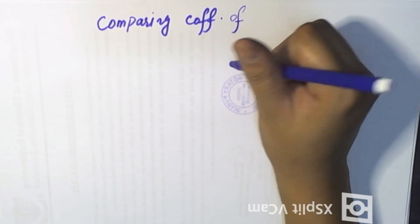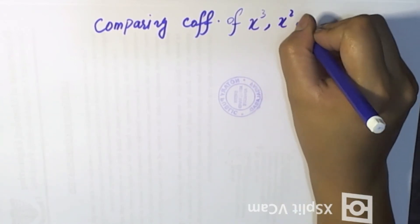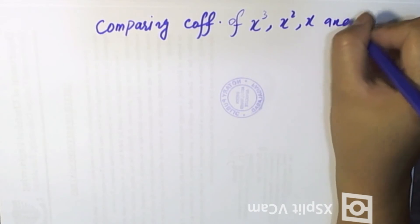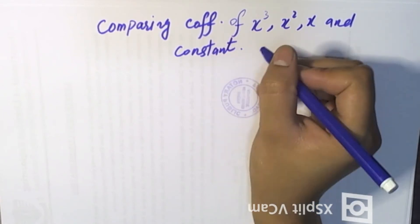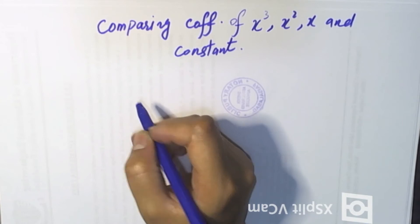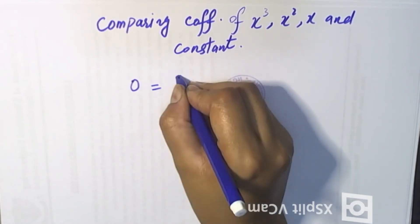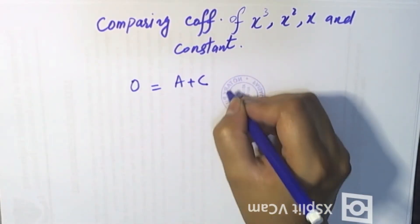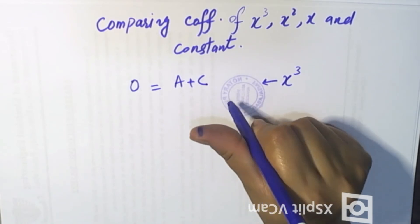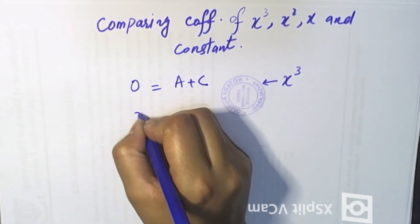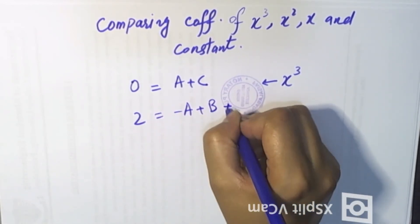Kaun jo coefficient hum compare kar rahe hain: x cube, x square, x, and constant. Isare jo hai woh humne compare karne hain. Left side pe x cube ka coefficient zero hai, aur right side pe A plus C aayega. Yeh humne kiya — x cube ka coefficient compare kiya. Next: x square coefficient compare — A plus B plus C plus D.